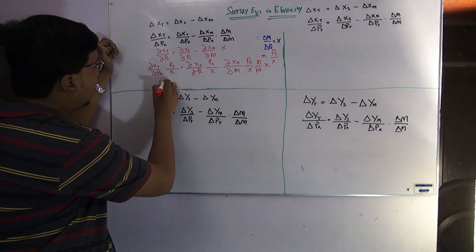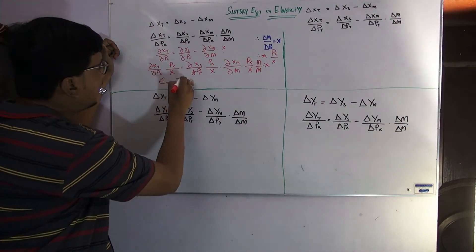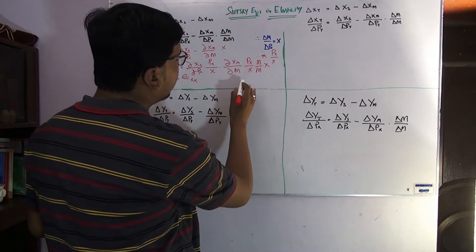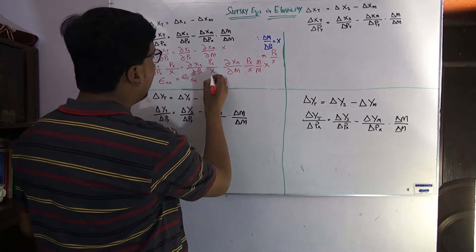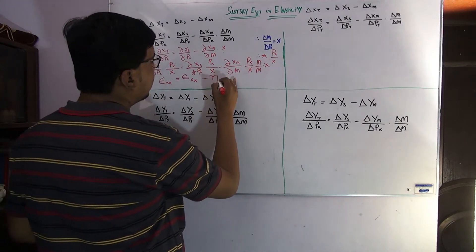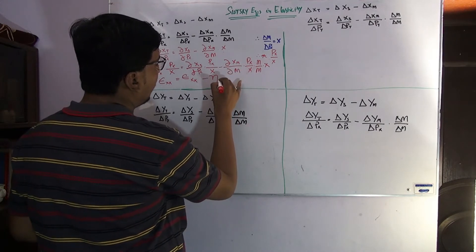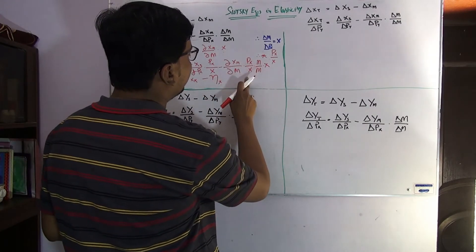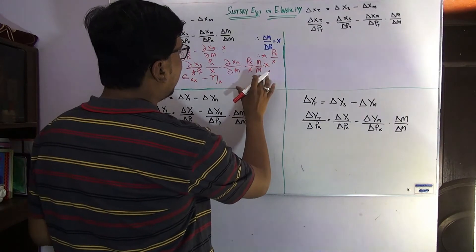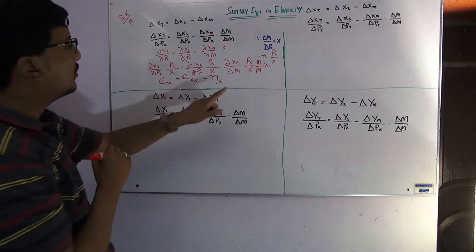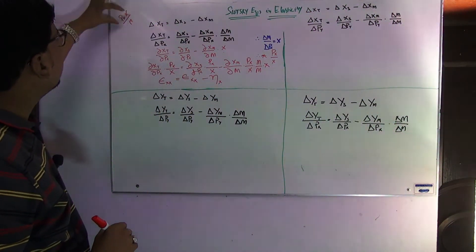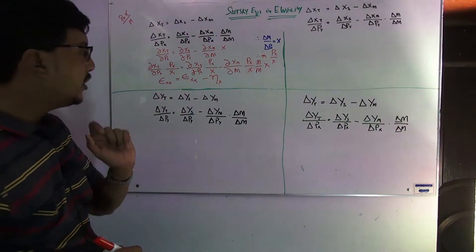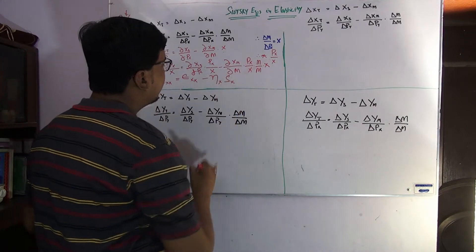This gives the direct own price elasticity on the left side. On the right side, using X over M and M over X, the income elasticity is represented by nu (ν). The remaining terms are Pxx over M — the own price elasticity, the income elasticity, and the share of X in total expenditure (Pxx/M is the budget share of commodity X).